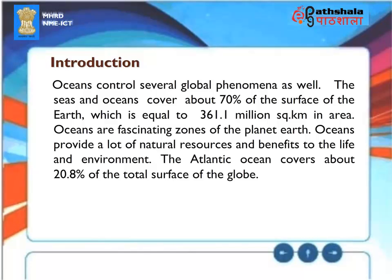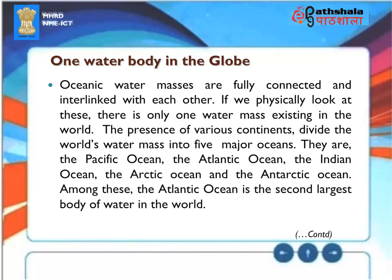The seas and oceans cover about 70% of the surface of the Earth, which is equal to 361.1 million square kilometers in area. Oceans are fascinating zones of the planet Earth, providing a lot of natural resources and benefits to life and the environment. The Atlantic Ocean covers about 20.8% of the total surface of the globe. Oceanic water masses are fully connected and interlinked — physically, there is only one water mass existing in the world.